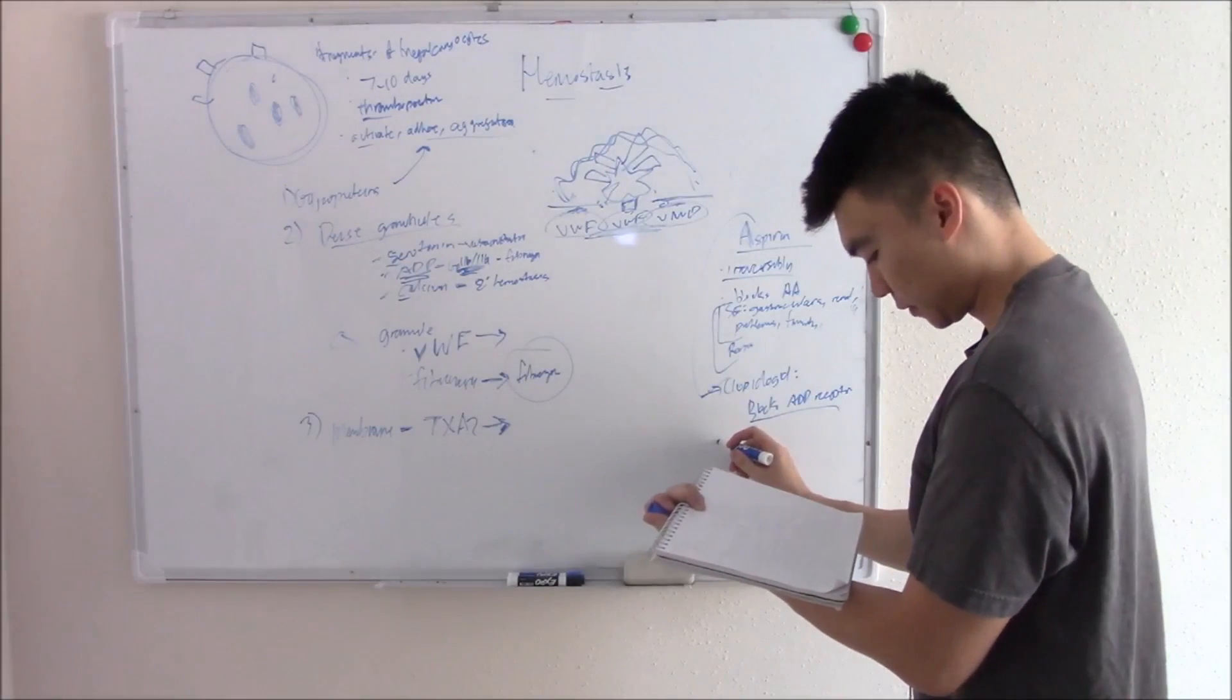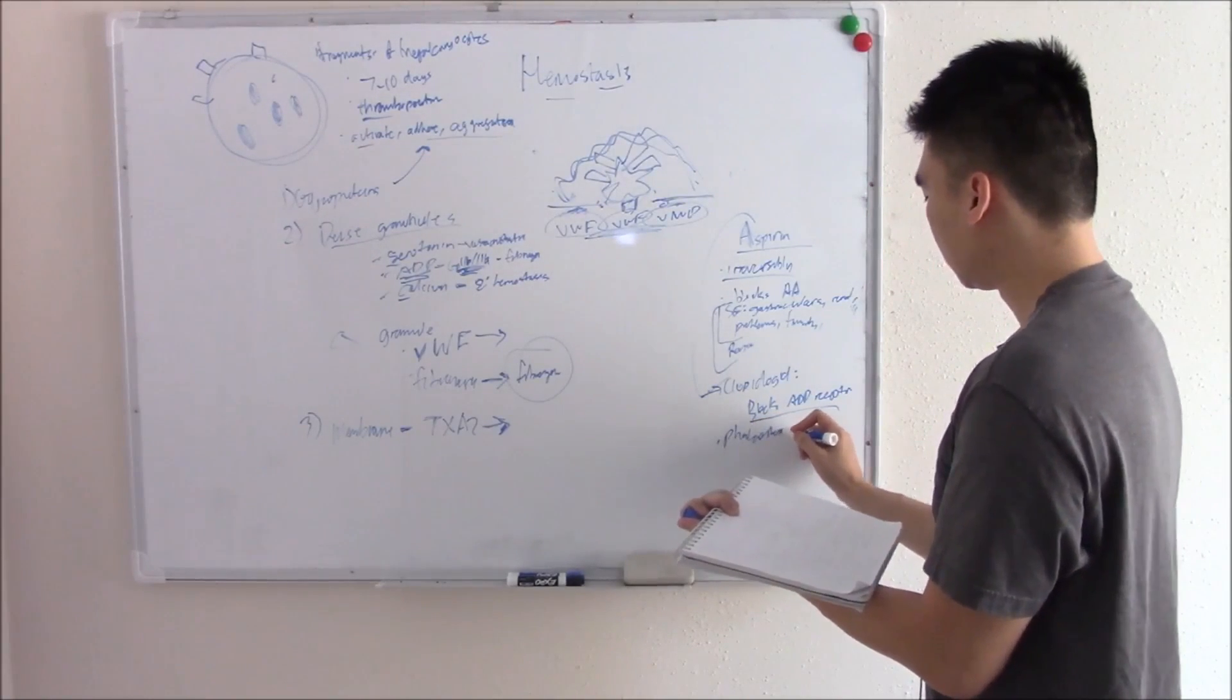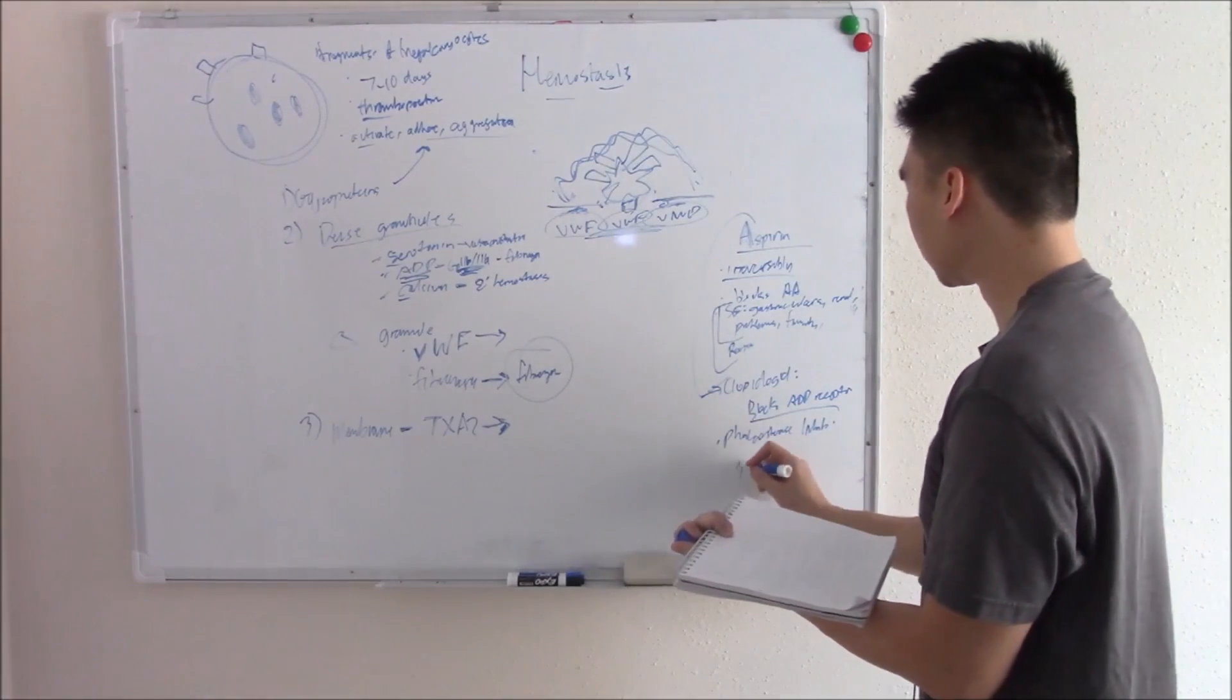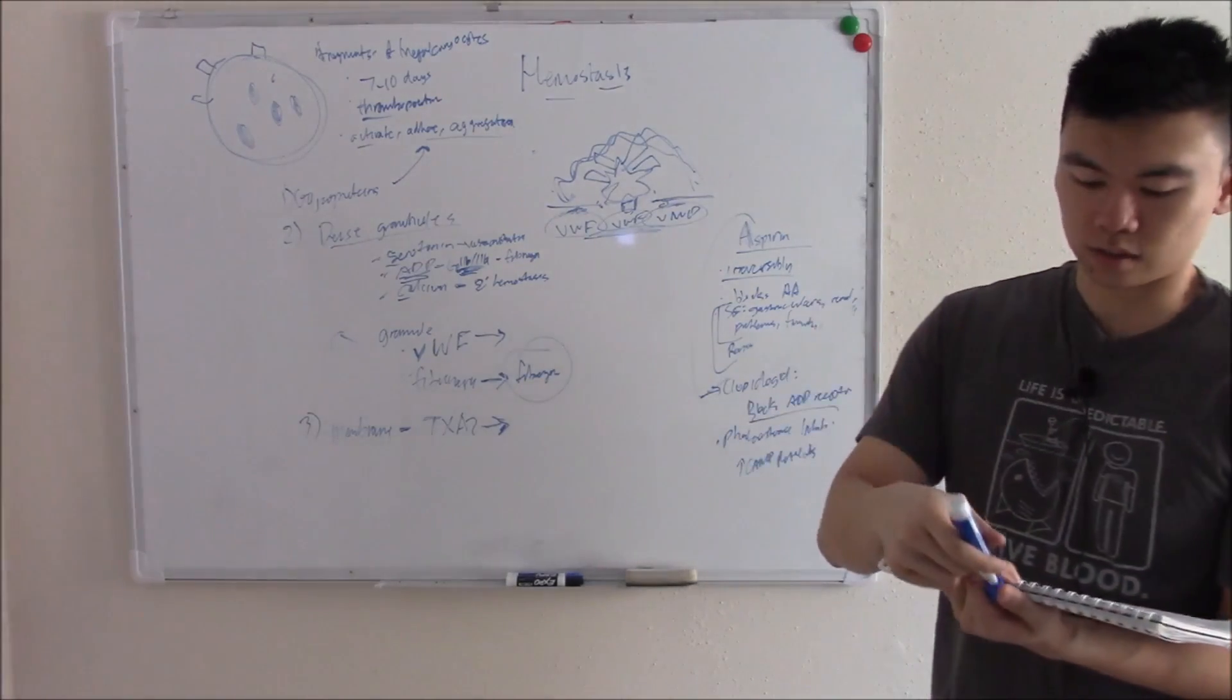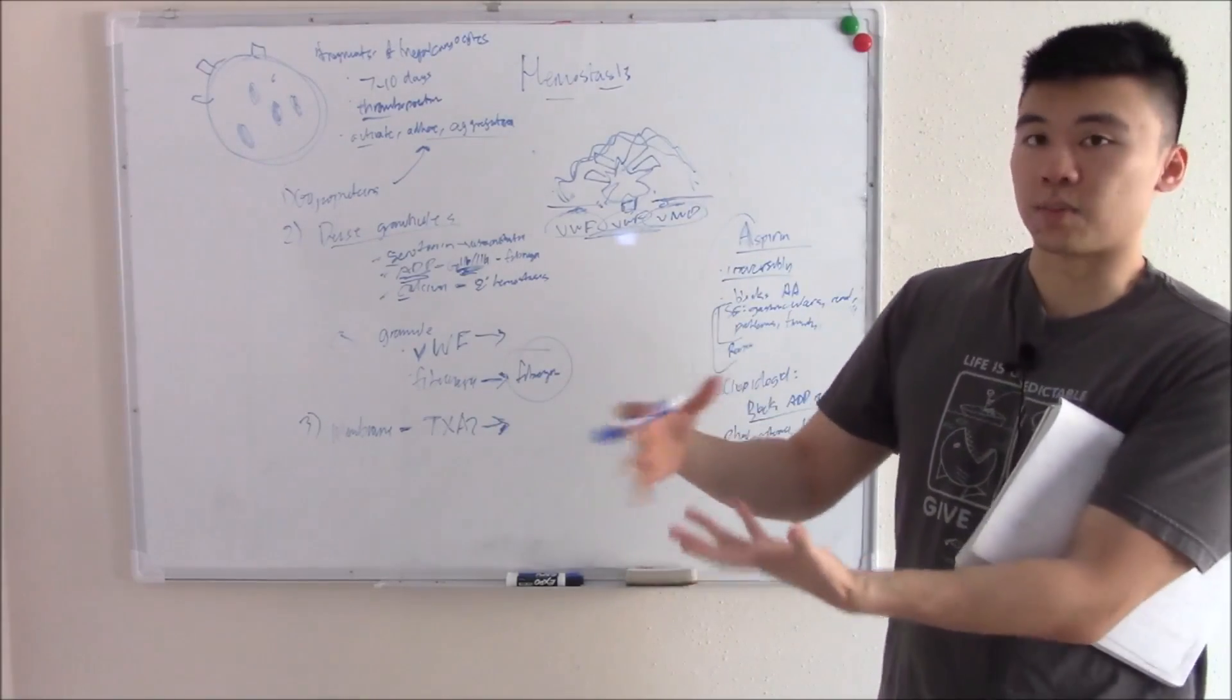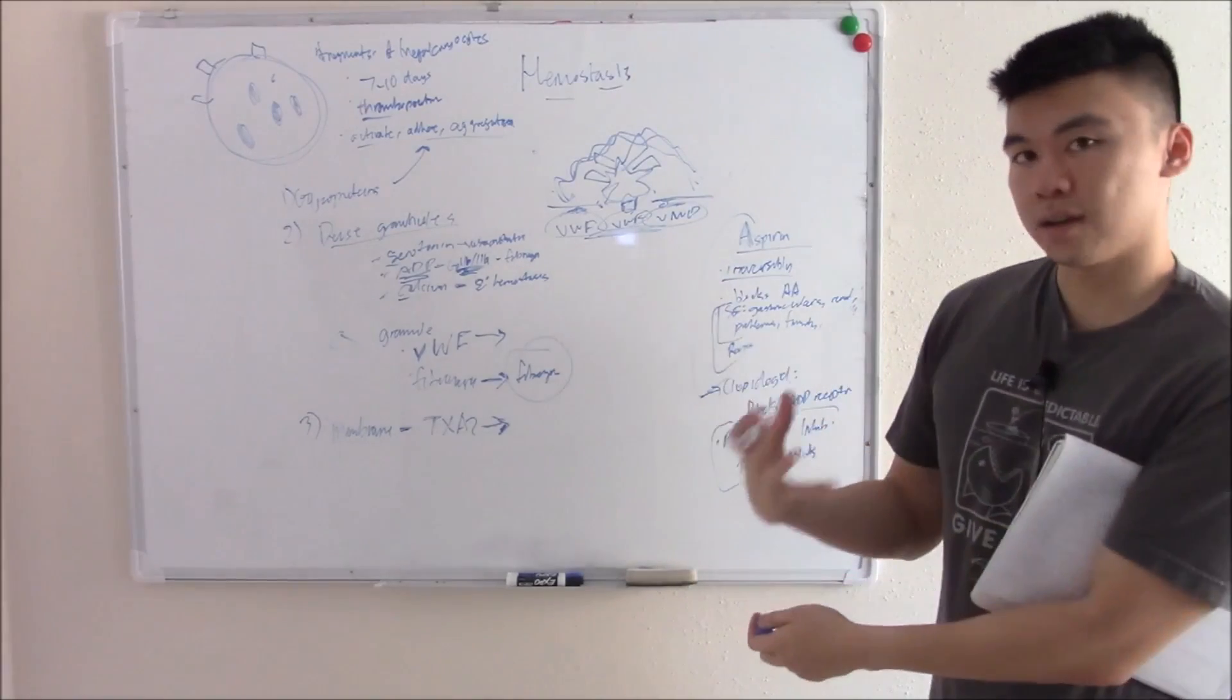Next up is a phosphodiesterase inhibitor. This increases cAMP in your platelet and that causes it to not aggregate as well. It's also a direct vasodilator, so that also helps in stopping aggregation. That's an antiplatelet.